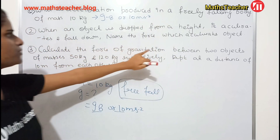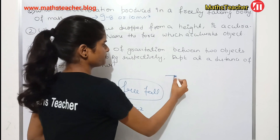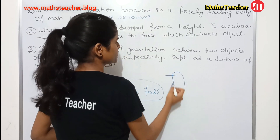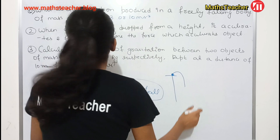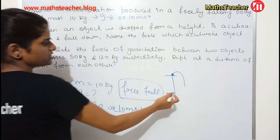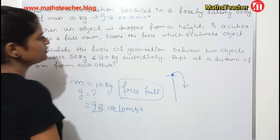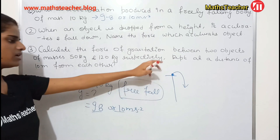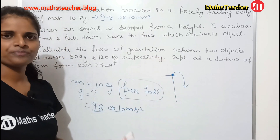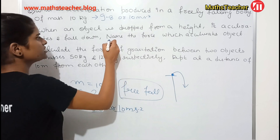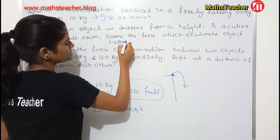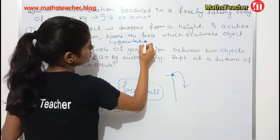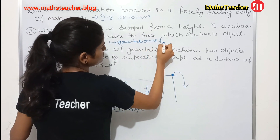When an object is dropped from a height, it accelerates and falls down. Name the force which accelerates the object in the downward direction. The answer is: gravitational force.